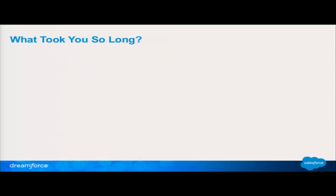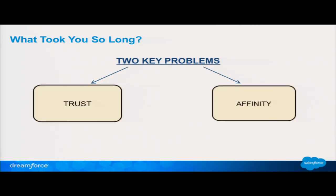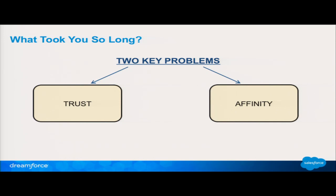The question you're probably thinking to yourself is: what took you so long? It's a fair question. I joined the dev tools team two years ago and three or four months after that it was the question I started asking — why can't we do this? And there are two key problems that we have to worry about in putting this together. We have to worry about trust and we have to worry about affinity — two key problems in creating a multi-tenant debugger that succeeds in the multi-tenant environment.